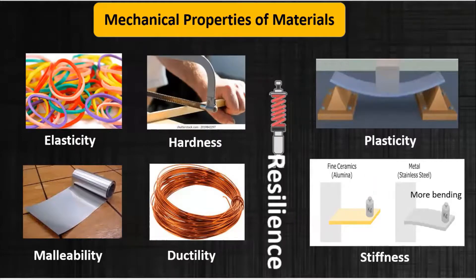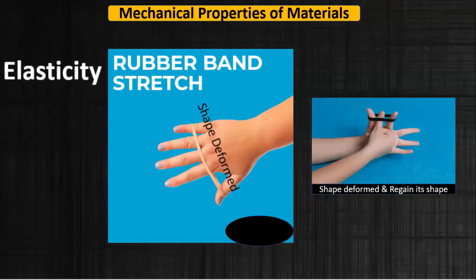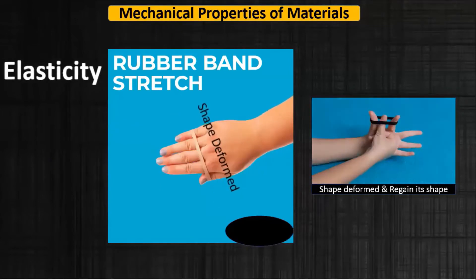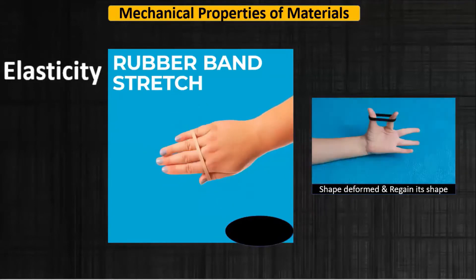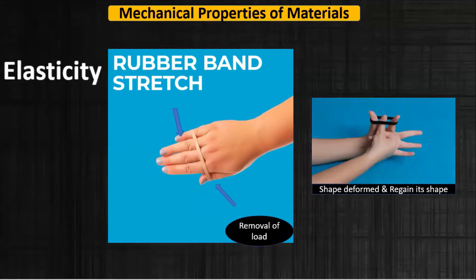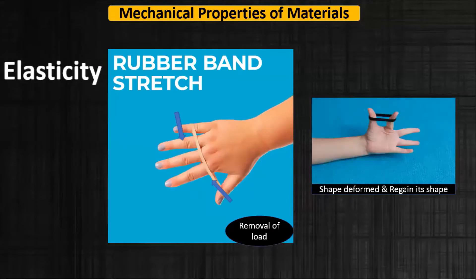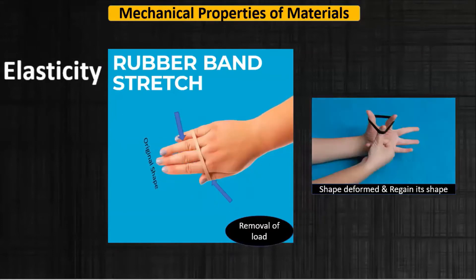So let's start with the elasticity. When we stretch a rubber band, the shape of the rubber band gets deformed. Now when you stop stretching, the rubber band regains its original shape and size. This is due to the elastic nature of the rubber band.